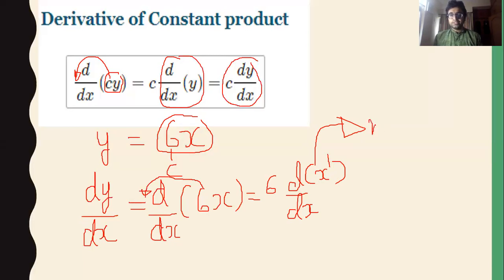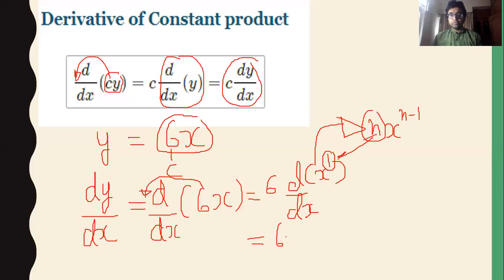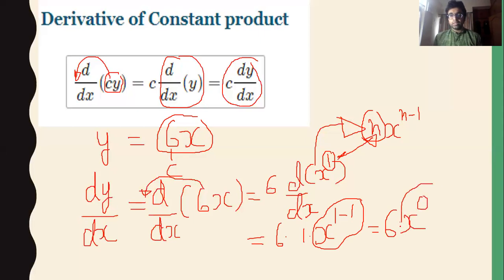The power rule says that if we want to differentiate a term with index n, its differentiation will be n into x to the power n minus 1. Here the value of n is 1, so we substitute and get 1 into x to the power 1 minus 1, which is x to the power 0. Since anything raised to 0 equals 1, our final answer is 6.